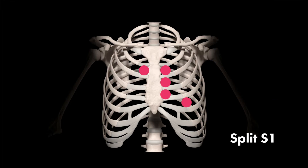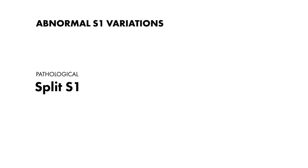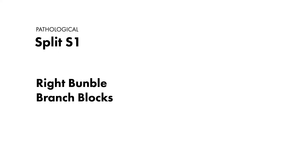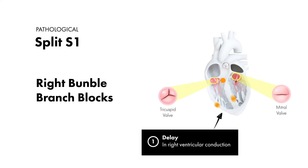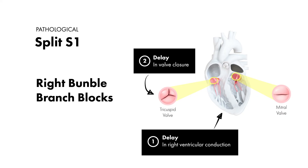Keep in mind that a split S1 can also be suggestive of an underlying pathology, such as in the case of people with right bundle branch blocks, where the delay in right ventricular conduction leads to a slight delay in the closure of the tricuspid valve in relation to the mitral valve.